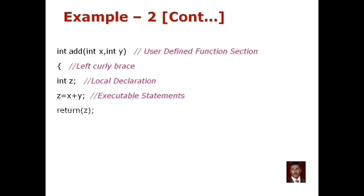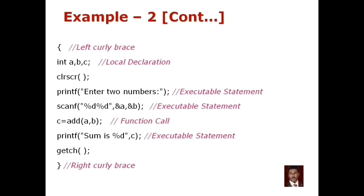Next is the return statement. If the return type is void, there is no return value. If you enter int as the return type, then return Z is used — meaning if you have an integer value, the return type of the function is int. When the task is finished, the right curly brace closes the function. The result is returned when the function is called, and the returned value is stored in c, which is then printed with printf.